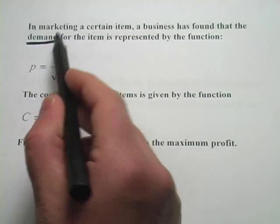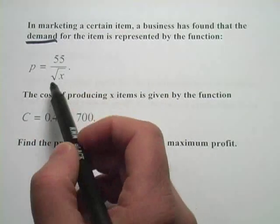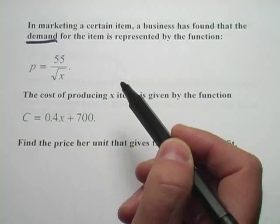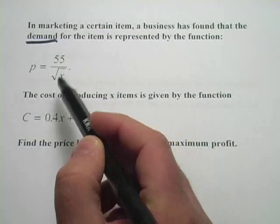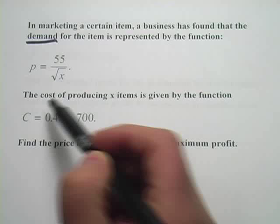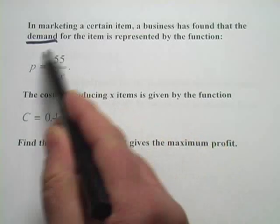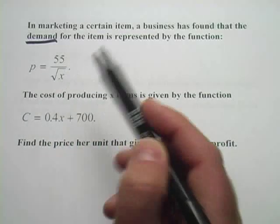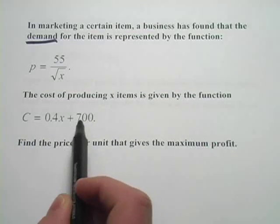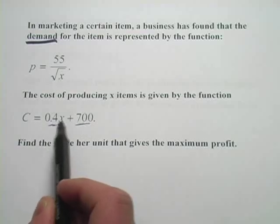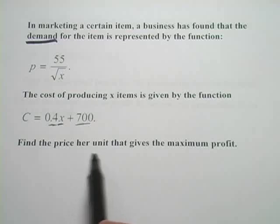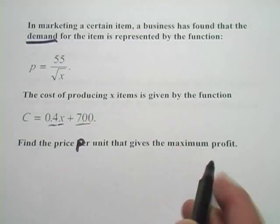Another way to think about this, this is called a demand function. This is also the price that you're going to charge, and x represents the number of units that you're making. This demand function says based on the number of units that are out there, this is what people are willing to pay, so that's how you set your price. Then it says the cost of producing x items is given by this function, so here's your fixed cost and here's what it costs for materials or manufacturing for each individual item, and then find the price per unit that gives the maximum profit.